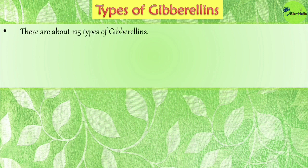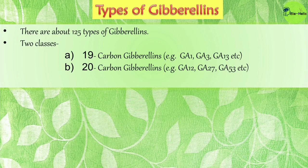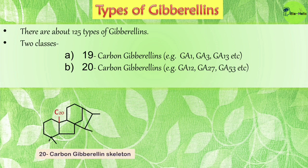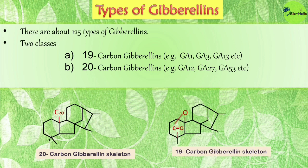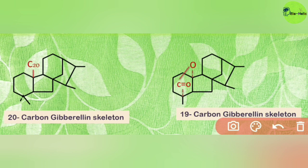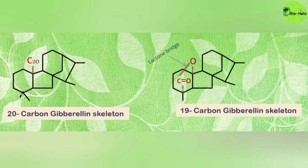There are about 125 types of gibberellins. They can be classified into two classes: the 19-carbon gibberellins, for example GA-1, GA-3, GA-13, etc., and the 20-carbon gibberellins, for example GA-12, GA-27, GA-53. The 20-carbon gibberellin skeleton has an extra 20th carbon, whereas the 19-carbon gibberellin skeleton has the presence of a lactone bridge.